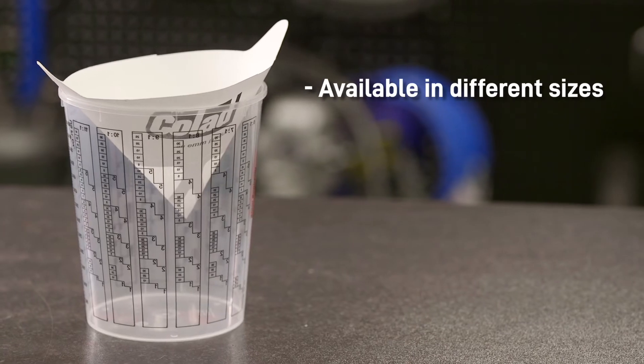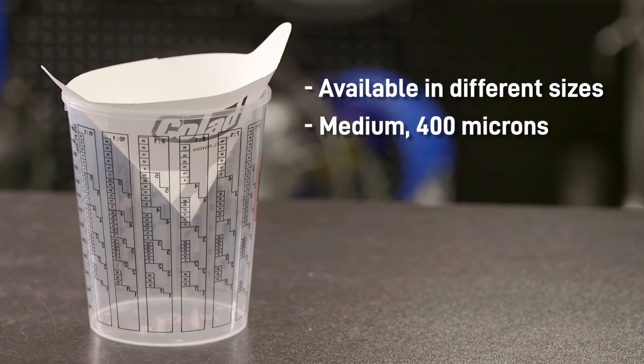This keeps any foreign particles from getting into the spray gun, damaging it and causing imperfections in the paint finish. They come in different filter sizes from medium, which is 400 microns.